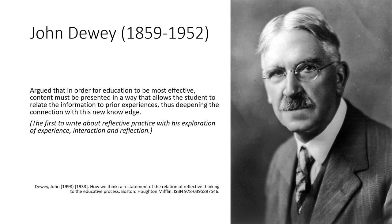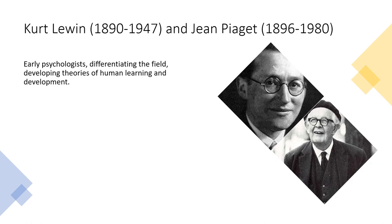Our modern story begins with John Dewey, one of the main influencers of Carl Rogers, the founder of person-centred therapy. Dewey was the first to write about reflective practice and the interaction between experience and reflection on it. Here we have Kurt Lewin and Jean Piaget, both early psychologists who were differentiating the field of psychology at the time, developing theories of human learning and development. Since the late 1960s and 1970s, there was and continues to be a growing literature and focus around experiential learning and the development and application of reflective practice. Central to the development of reflective theory was interest in the integration of theory and practice, the cyclic pattern of experience, and the conscious application of lessons learnt from experience.